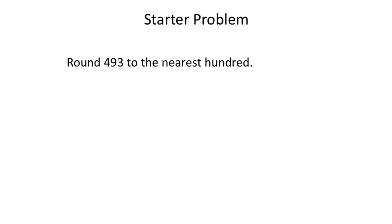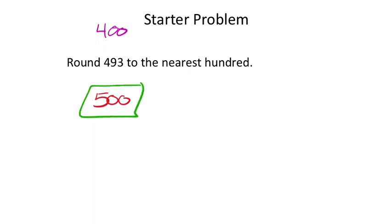Round 493 to the nearest hundred. If we understand rounding, we know there are only two options: 500 or 400. And 493 is only 7 away from 500, but it's a lot further away from 400. So our answer would be 500 rounded to the nearest hundred. Going through our rules, we look at the hundreds place value, which is where the 4 is. Immediately to the right is a 9, which is 5 or more, so we add 1 to the 4, giving us 5. Five hundreds.